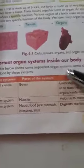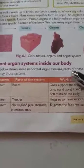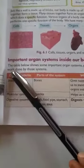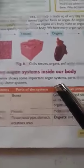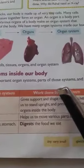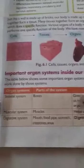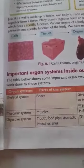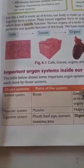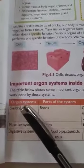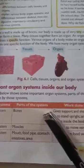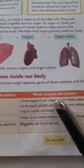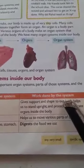Important organ systems inside our body are shown in the table below. The table shows some important organ systems, the parts of those systems, and the work done by those systems.